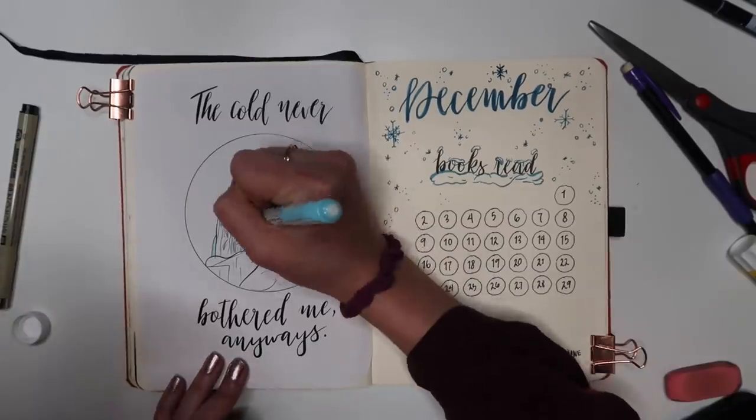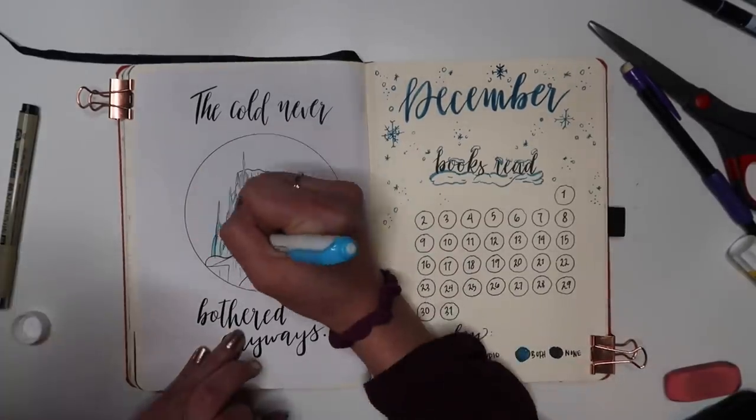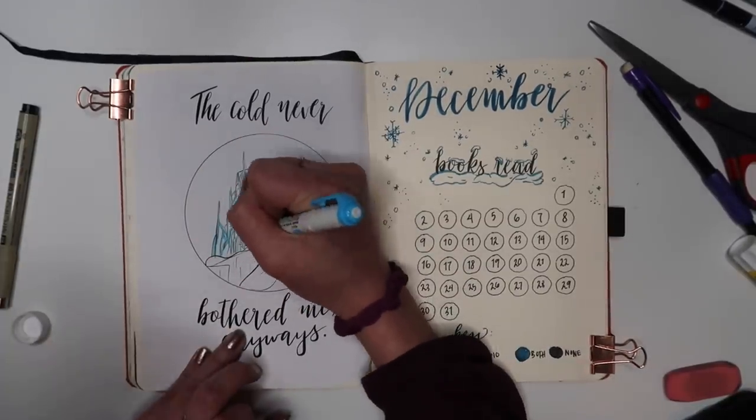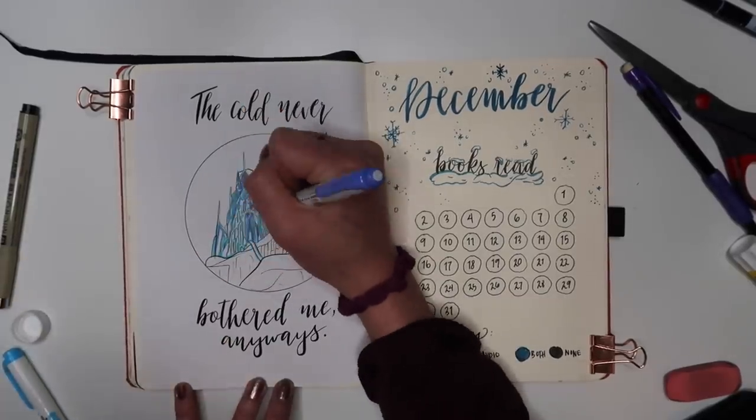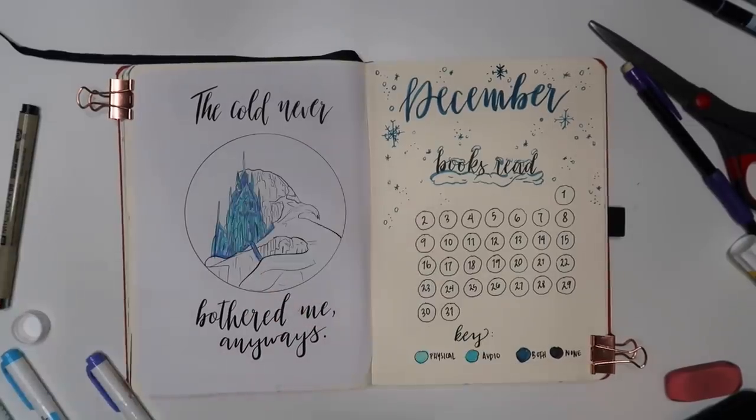The coloring in process I just did with the zebra mild liners for the most part and it wasn't specific or anything. I didn't even really look at the original picture to see if I was doing it correctly. I just kind of wanted a general impression of it.